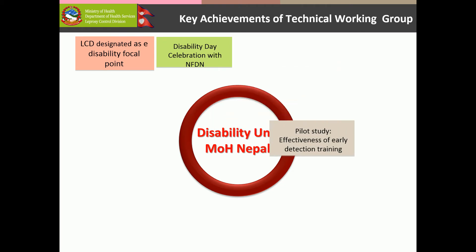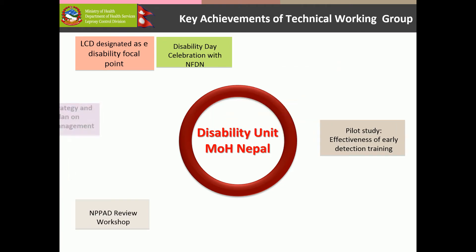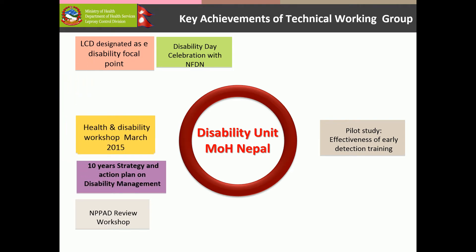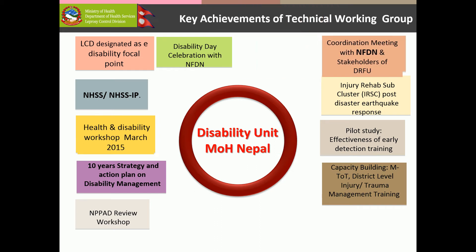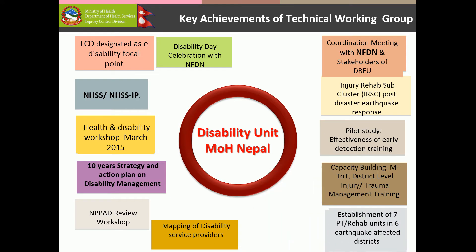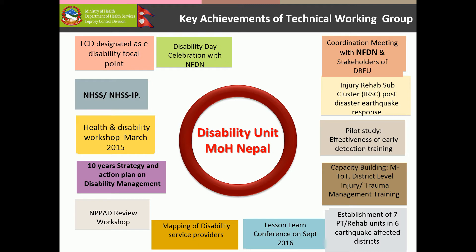Just one month before the earthquake, in February 2015, there was a big disability workshop in Nepal. At that time, the priority of Ministry of Health in rehabilitation was less. The workshop was organized to sensitize the Ministry of Health and make them understand the importance of rehabilitation as an important component in a health system. Just a few months later, we had the earthquake, and the Ministry of Health designated a focal unit for rehabilitation and disability management. That same focal unit was the lead of the Injury Rehabilitation Subcluster and is now leading long-term policymaking for rehabilitation. Nepal Physiotherapy Association is part of the technical working group supporting this unit to this day.